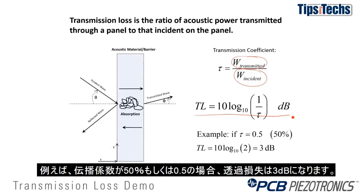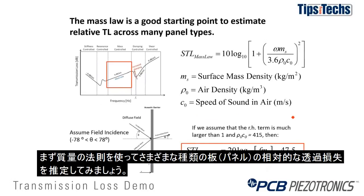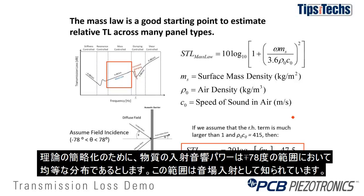For example, if your transmission coefficient is 50% or 0.5, your transmission loss would be 3 dB. The mass law is a good starting point to estimate relative transmission loss between many panel types. This simplification of transmission loss theory assumes an even distribution of incident sound energy on a panel over an angular range of minus 78 degrees to plus 78 degrees. This is known as field incidence.